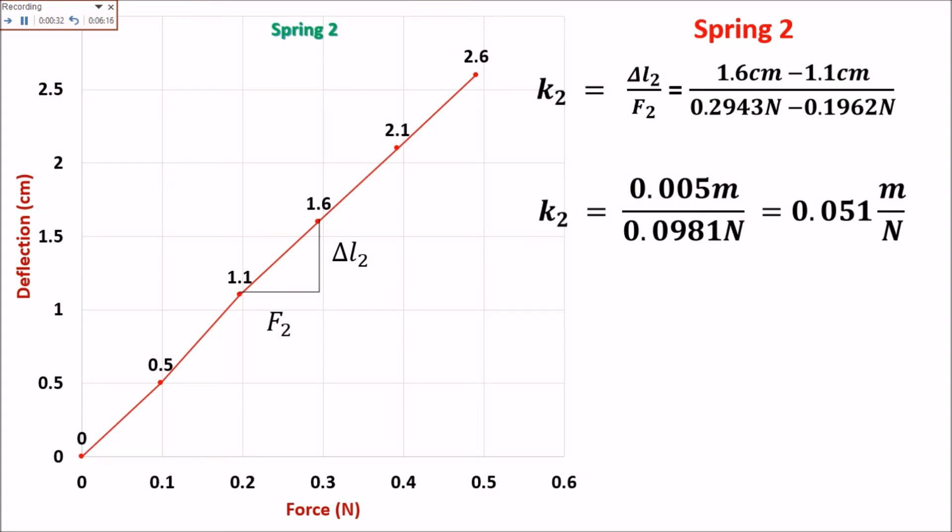So we have 0.05 meters, we convert the centimeter to meters, and 0.0981 newton. This will become 0.051 meter per newton.